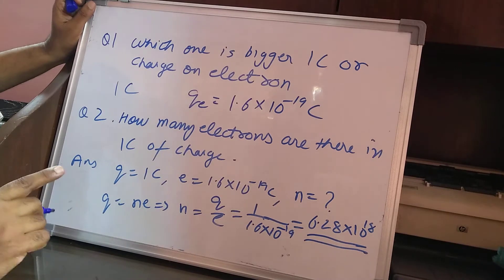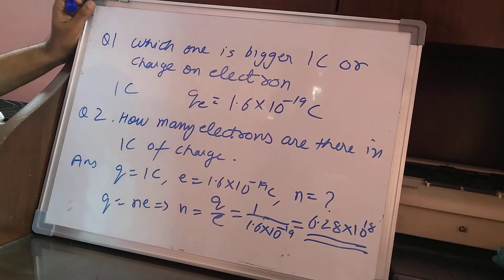So in one coulomb of charge, the number of electrons are 6.28 into 10 raised to the power 18 electrons. And this is a fixed quantity. It's a fixed number.